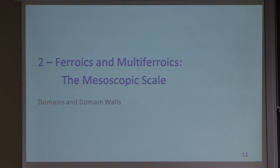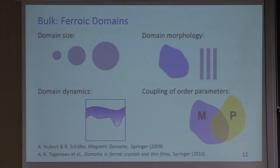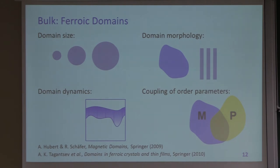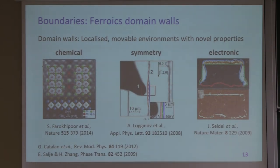The main focus of my talk is the mesoscopic view: domains and domain walls. In ferroic materials, the properties of domains matter — domain size, domain morphology, domain dynamics, and coupling of the order parameter. For magnetic memory storage, domain size is relevant for density. Fast switching requires understanding how domains switch. In multiferroics, we are especially interested in how different domains relate. Boundaries between ferroic domains also have very interesting properties: they are localized, typically a few nanometres in ferroelectrics and up to 100 nanometres in ferromagnets, and they can be created, moved, and destroyed.